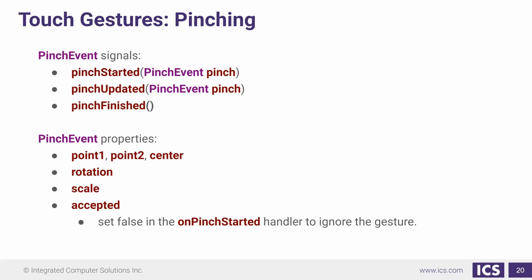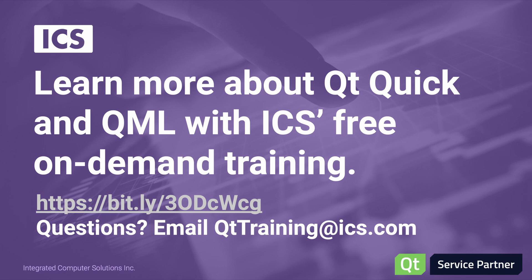Now, our pinch event has several properties, our point1 and our point2, which is where our fingers are located. There is the center point. Of course, there's a rotation and scale. And then there's whether or not it's been accepted. And this is set false if you don't want pinchStarted to actually handle the gesture at all.